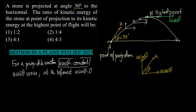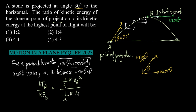We need to find the ratio of kinetic energy at the point of projection A to kinetic energy at the highest point B. That gives us KE at A over KE at B, which is one-half m u_A squared over one-half m u_B squared.